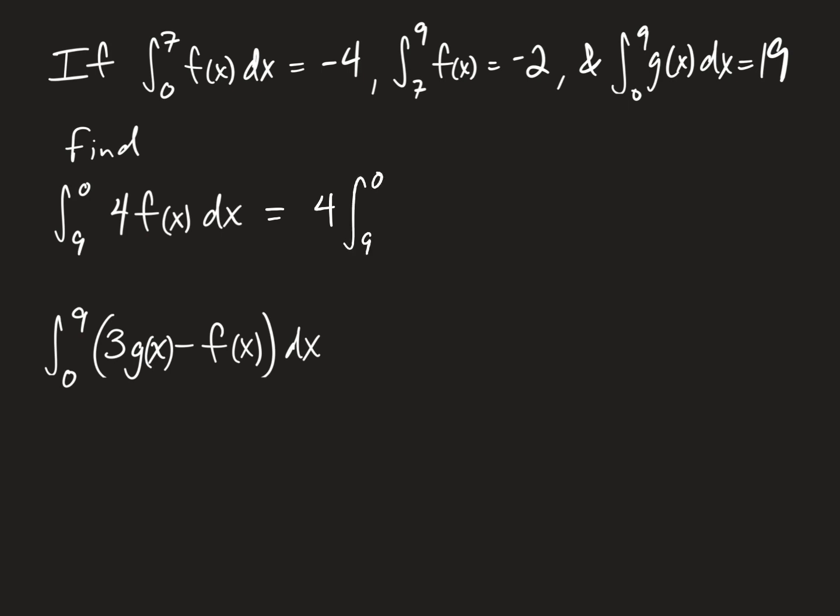From here, it should be recognized that normally we want the smaller limit of integration on the bottom. So I'm going to go ahead and change that. So in order to change these limits of integration, I'm going to have to make this sign different. So it's going to be negative four times the integral from zero to nine of f of x dx. And from here, you want to recognize that you can integrate from zero to nine by first going from zero to seven and then from seven to nine.